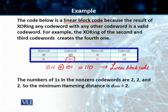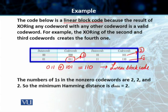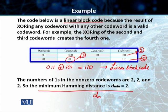Students, we also went through the concept of minimum Hamming distance. In this block code, looking at the number of 1s in all non-zero codewords: the first non-zero codeword has 2 ones, the second has 2 ones, and the third also has 2. So the minimum number of 1s in non-zero codewords is 2, meaning the minimum Hamming distance d_min is equal to 2.